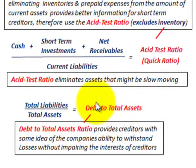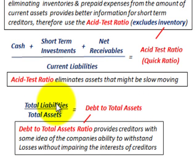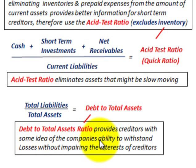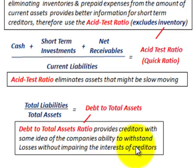Now let's look at the debt to total assets ratio — that is total liabilities divided by total assets. This ratio provides creditors with some idea of the company's ability to withstand losses without impairing the interests of the creditors.